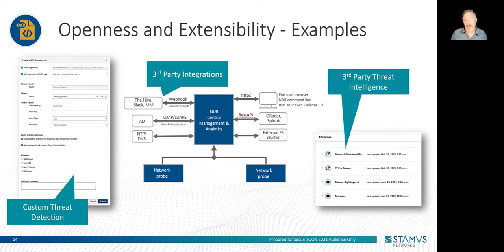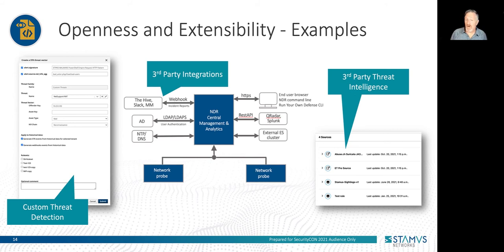Here are a few examples of what we mean by openness and extensibility. On the left, you can see a user interface for creating custom detections based on criteria uncovered during threat hunting. The diagram in the center illustrates a number of integrations that leverage open interfaces on the NDR. And finally, on the far right, you can see an example of how an NDR can configure third-party threat intelligence and rule sets.